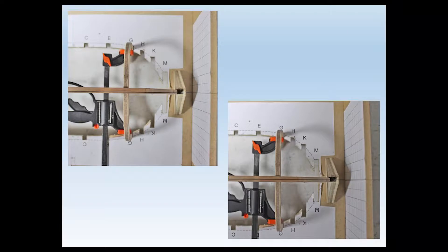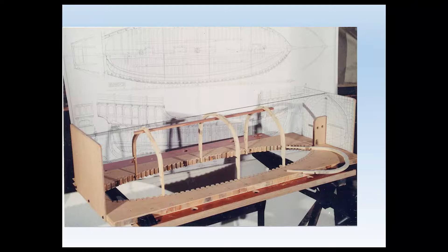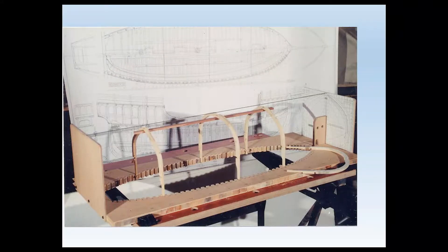You do that with three or four frames along the length of the hull, and you then have a basis for building the rest of the hull around it. In this particular example, you can see I've used a keel to lock those three frames in position.